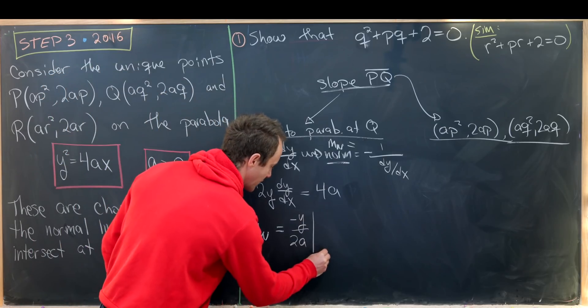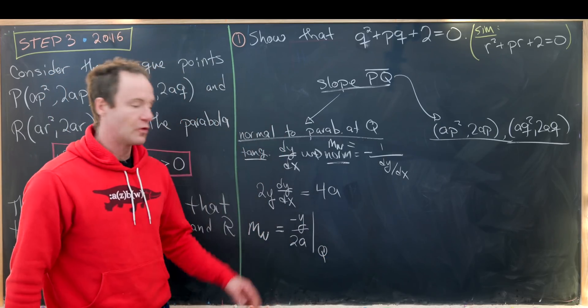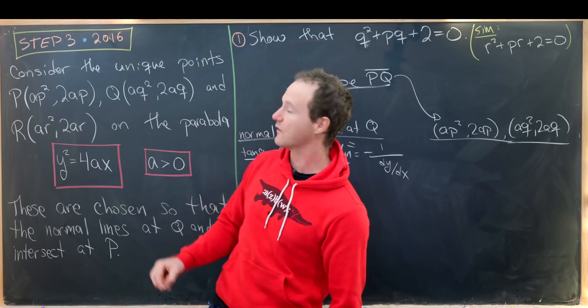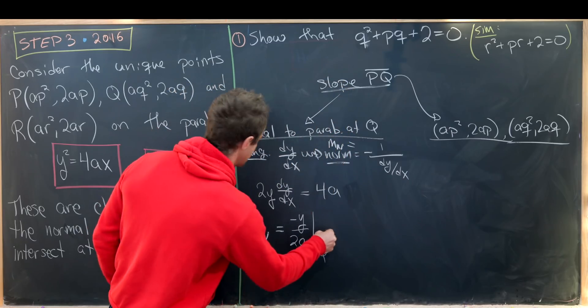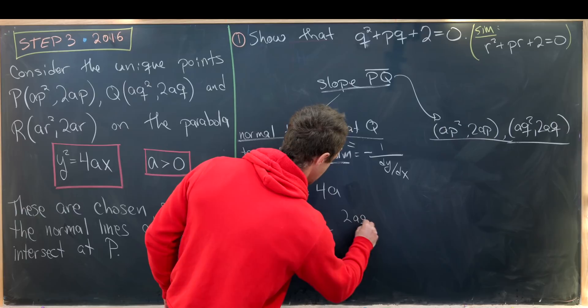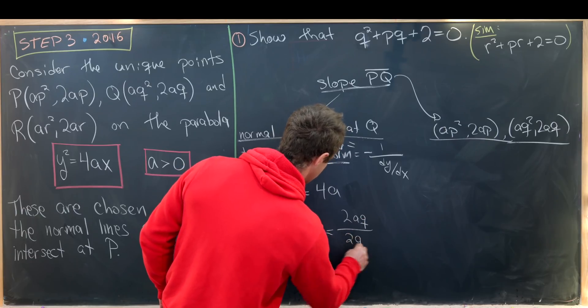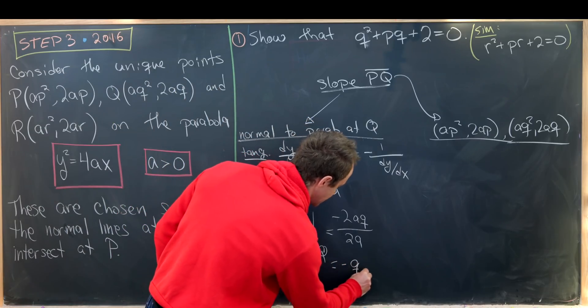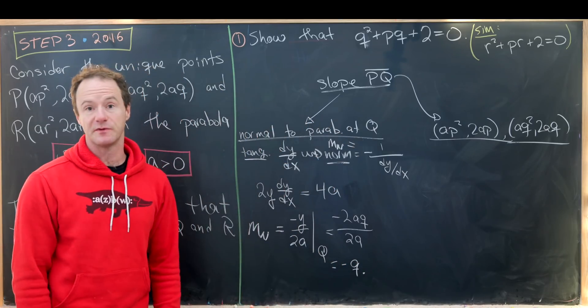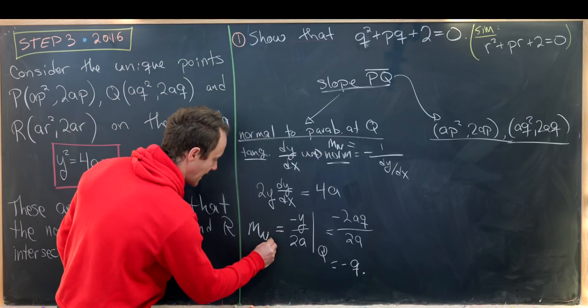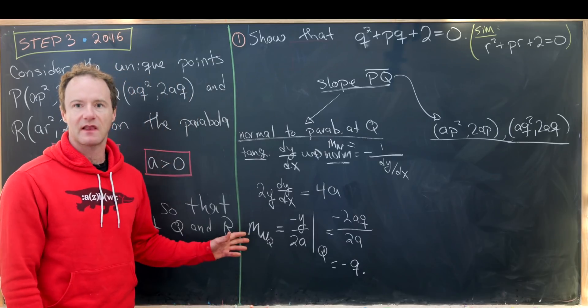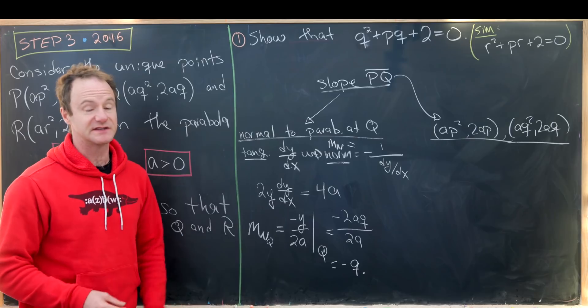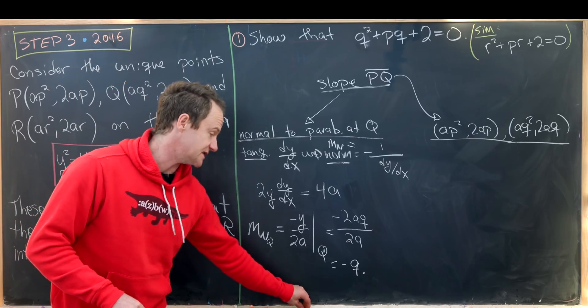That means that the slope of this normal line, which I'll call m_n, it's -1 over dy/dx but when everything cancels off this is going to be -y/(2A). Now evaluating this at the point Q which has coordinates (AQ², 2AQ) we only need the y coordinate. We get 2AQ/(2A) then we have a minus sign there. So in other words we just have -Q so that's the slope of that normal line.